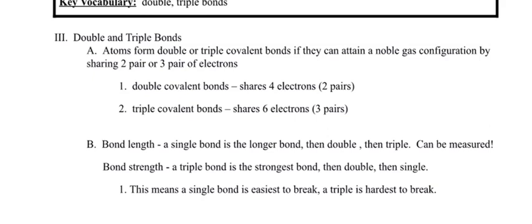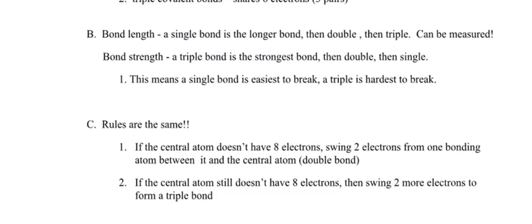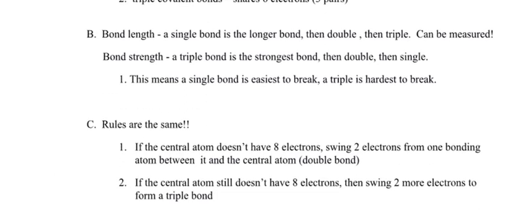The rules are the same as before. If you follow all the rules from single covalent bonds and the central atom still doesn't have eight electrons, swing two electrons from one bonding atom between it and the central atom to form a double bond. If it still doesn't work, swing two more to form a triple bond. If that doesn't work, you made a mistake — start over.